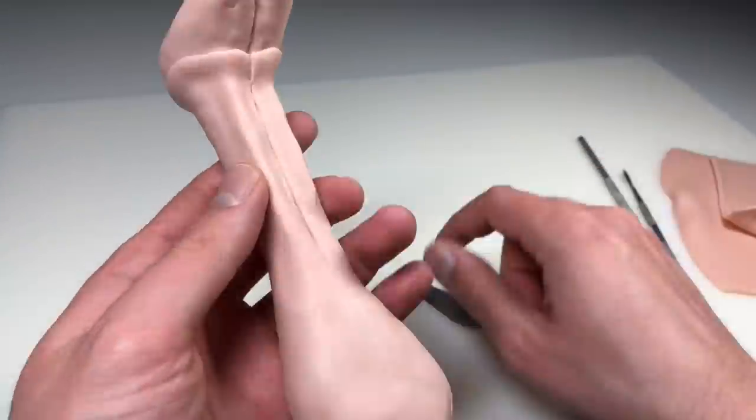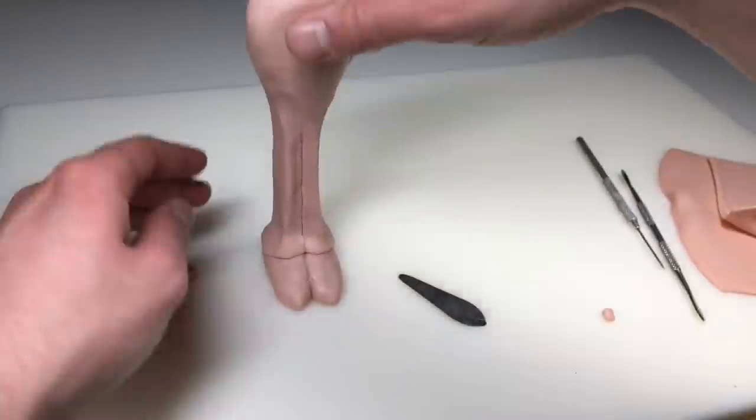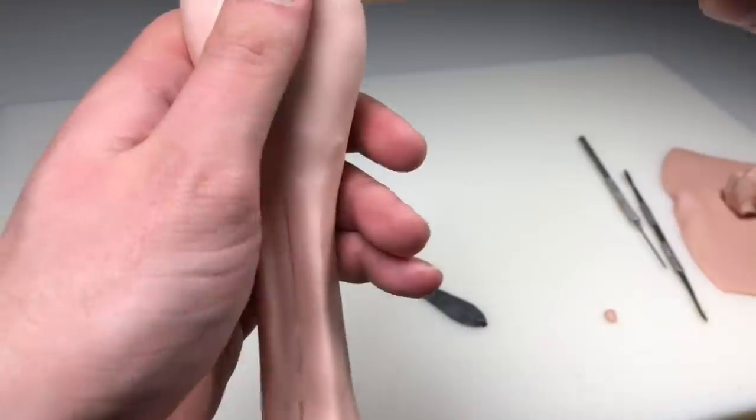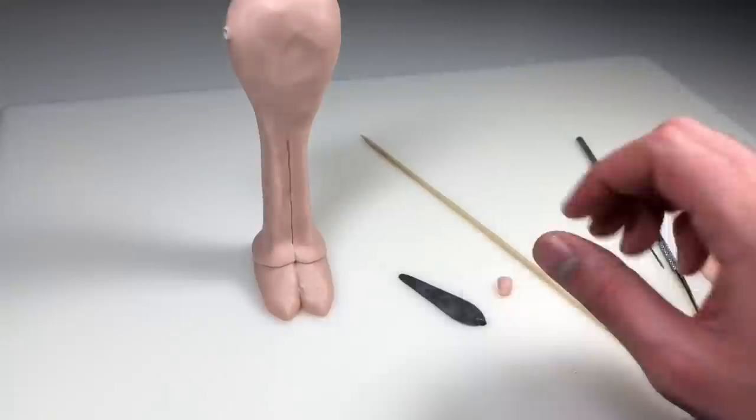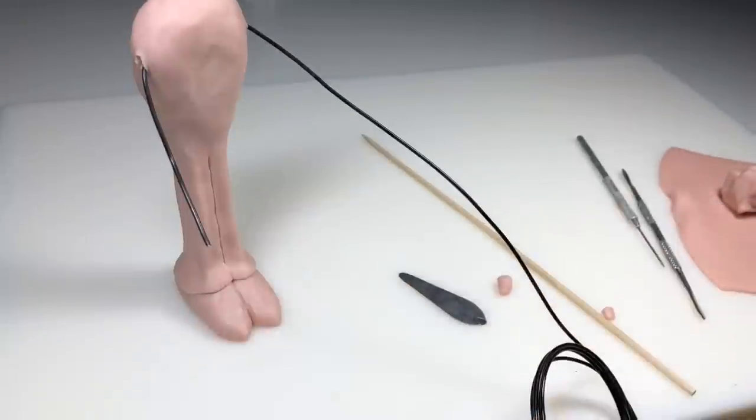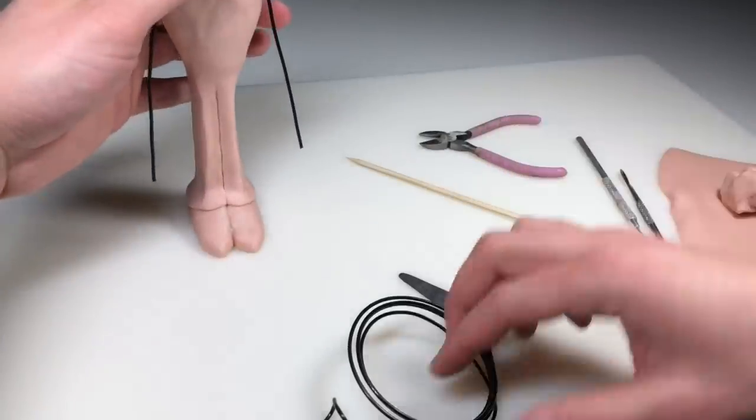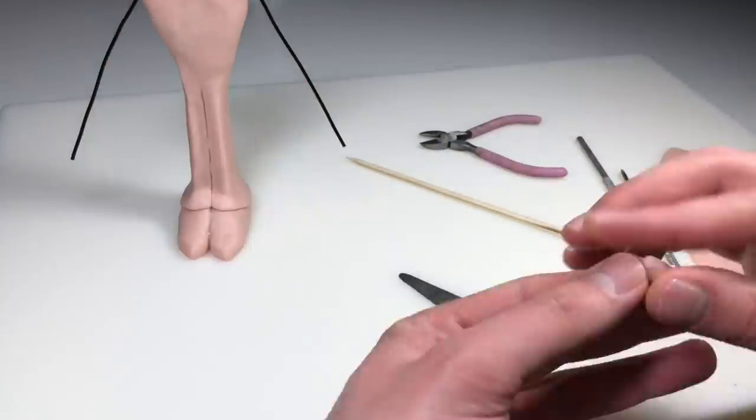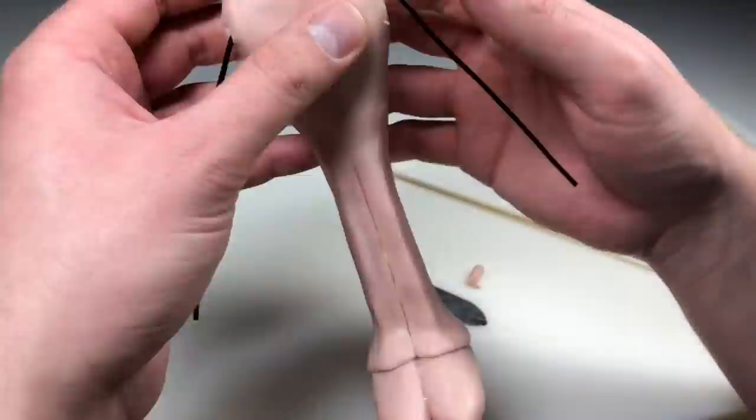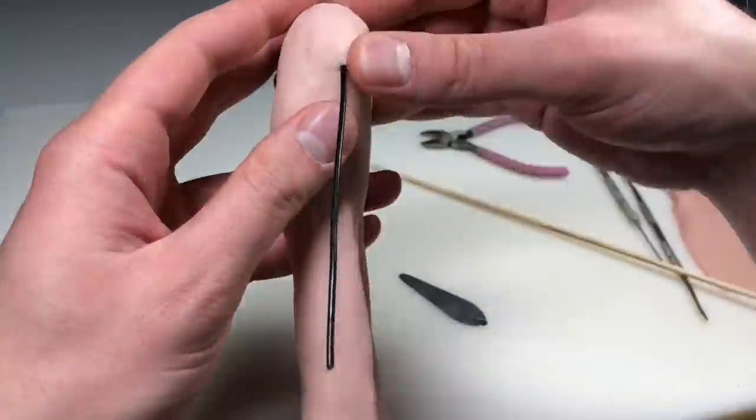The whole process up to this point went by so fast and I couldn't believe that it's already time for arms. To add the arms, I'm just piercing a hole through the top of the shoulders with my bamboo skewer, adding some 12 gauge aluminum wire all the way through, and now I am just securing them in place with some more Super Sculpey.